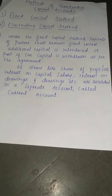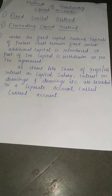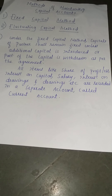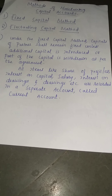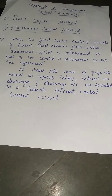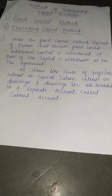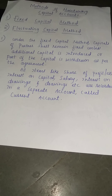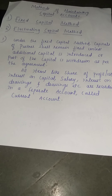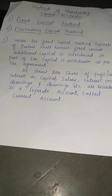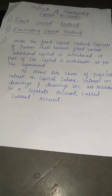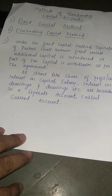There are two methods for maintaining capital accounts of partners. The first is the Fixed Capital Method. Under this method, the capital will never change — it remains fixed. Only if additional capital is brought in will it be added to the capital account, or if the partner permanently withdraws an amount it will be recorded. All other items like share of profit or loss, interest on capital, salary, interest on drawings, and drawings are recorded in a separate account called the Current Account.